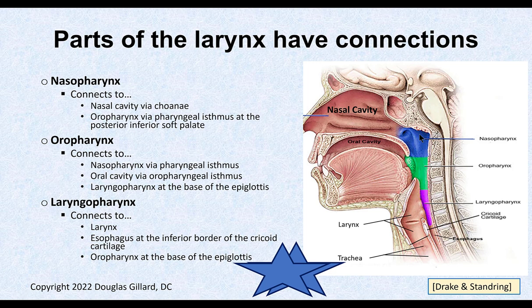Let's look at the oropharynx now. The nasopharynx has no connection to the oral cavity. The oropharynx connects to the nasopharynx above, and to the laryngopharynx below — though there's no name for that lower border. The border between oropharynx and laryngopharynx occurs at the base of the epiglottis. The oropharynx is also connected to the mouth. There's an imaginary line called the oropharyngeal isthmus — the border between the oral cavity and the oropharynx.